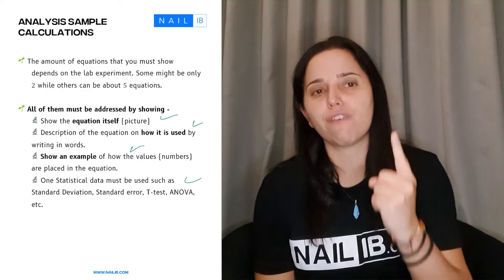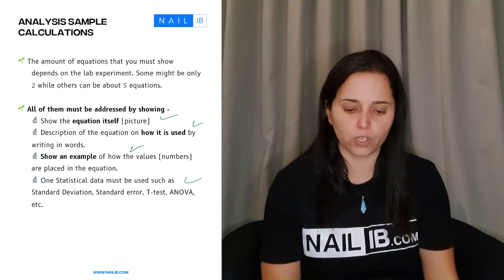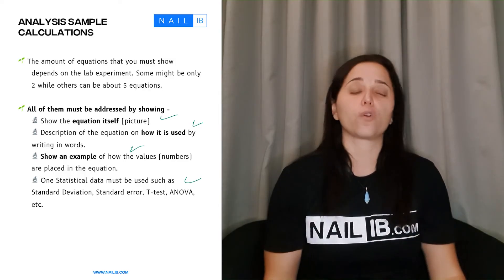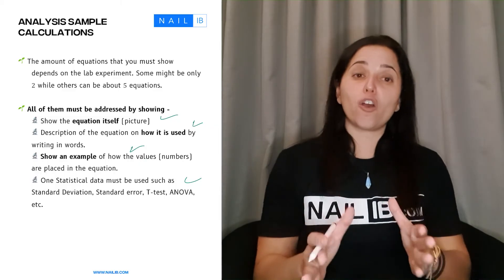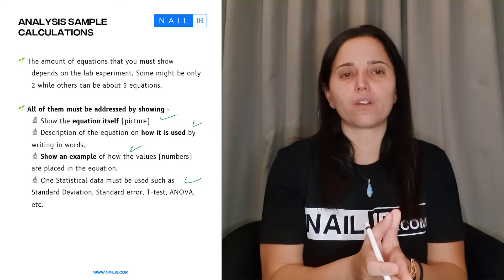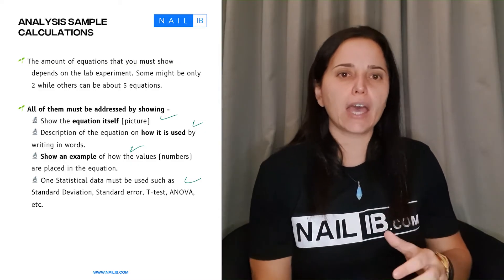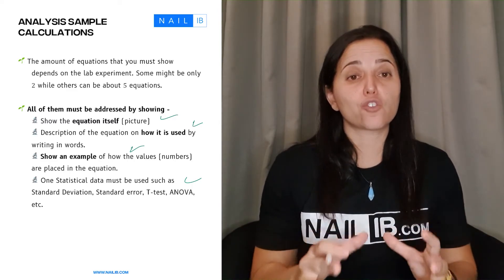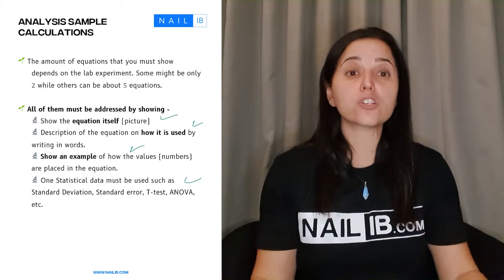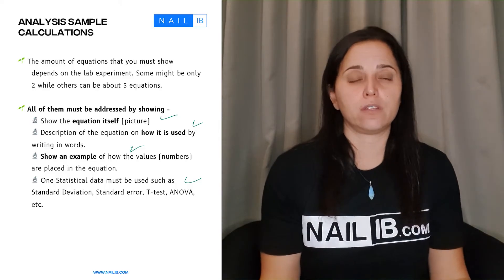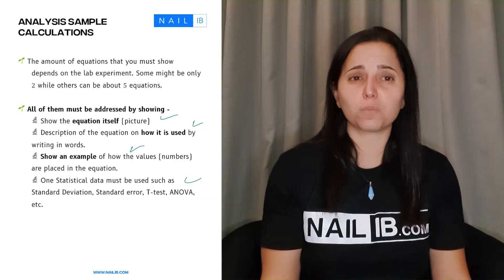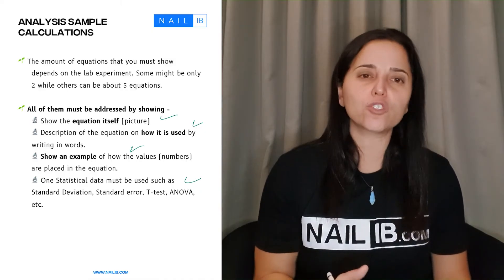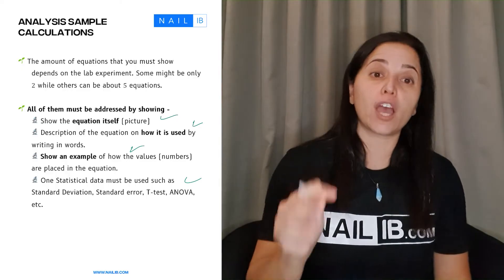And then of course after this you have to at least choose one statistical value, like one type of equation that you're going to use. It can be standard deviation, standard error, which usually go to standard deviation, t-test, ANOVA, and so forth. So it can be any, okay, but as long as it follows towards your lab report. Now a lot of students freak out and say I can't do t-tests or I don't know how to do ANOVA, Wilcoxon, whatever. You can stay to standard deviation. You just have to show one type of statistical equation that you can apply to it.